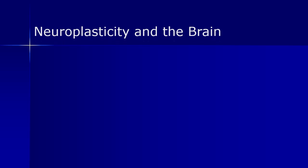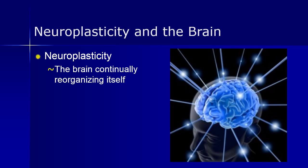Our brain has an amazing capacity to reorganize itself, known as neuroplasticity. It allows neurons to compensate for injury and disease and to adjust their activities in response to new situations or changes in the environment. For example, individuals who have suffered a stroke and lost functioning in some brain areas found that their brain had rewired circuits around the damaged area and found a way to continue functioning — pretty incredible!